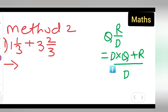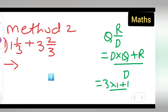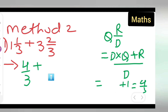Applying this to the first mixed fraction: three multiplied by one plus one upon three. Three ones are three, plus one gives four, so you get four-upon-three.